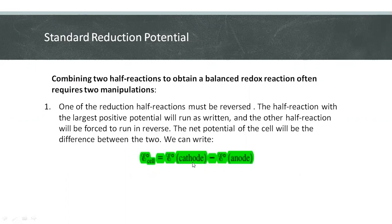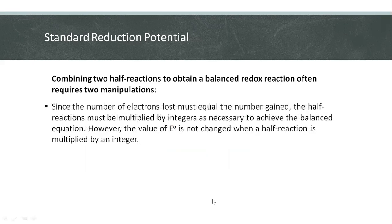Since the reduction process occurs at the cathode and the oxidation process occurs at the anode, we can write the cell potential or the standard reduction potential of the cell is equal to the standard reduction potential of the cathode minus the standard reduction potential of the anode. Our second manipulation.